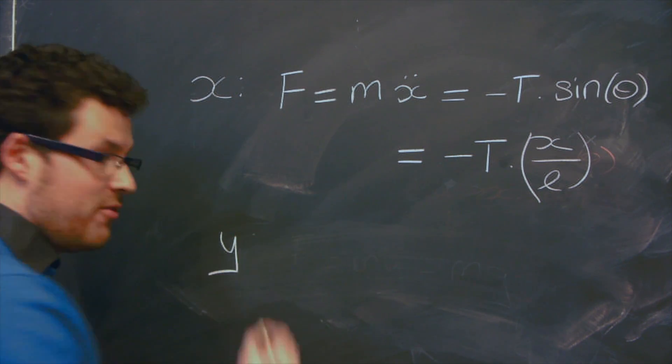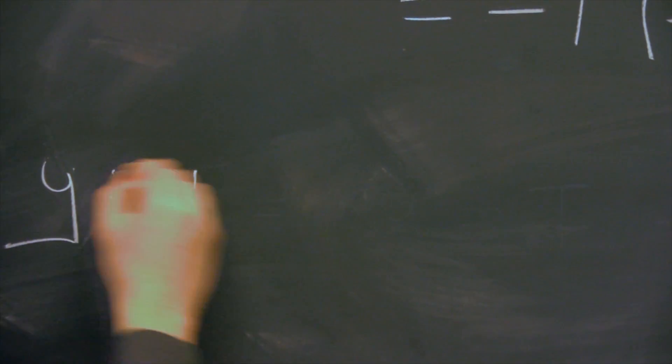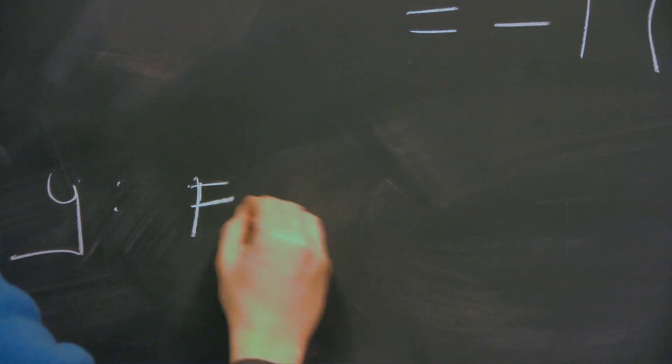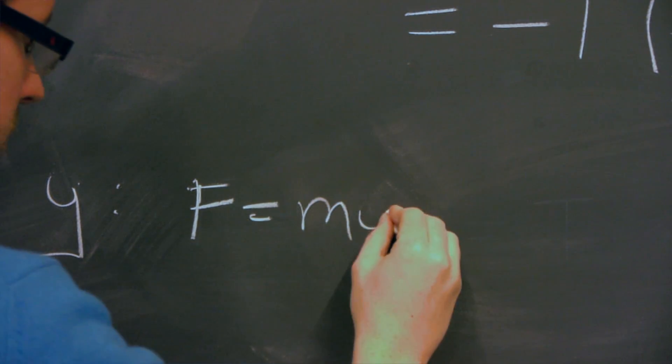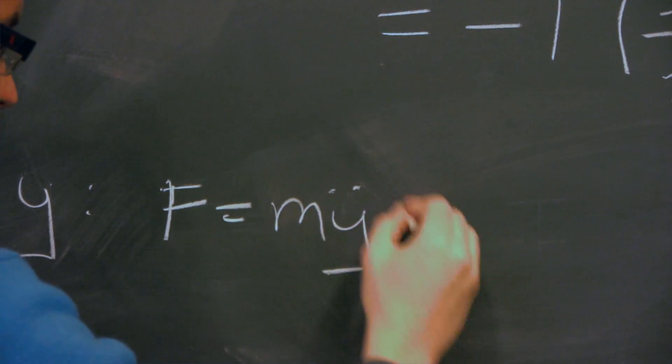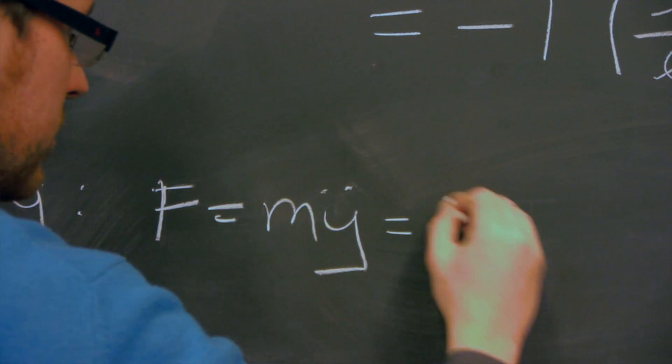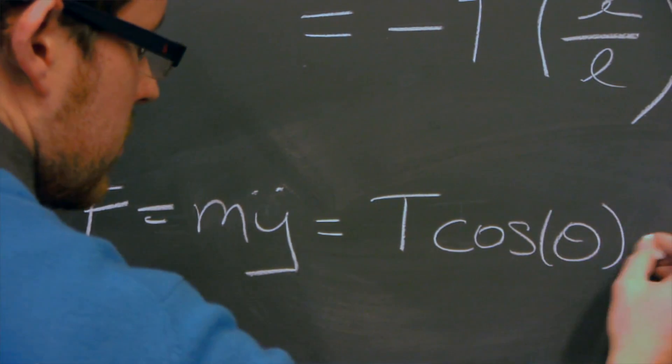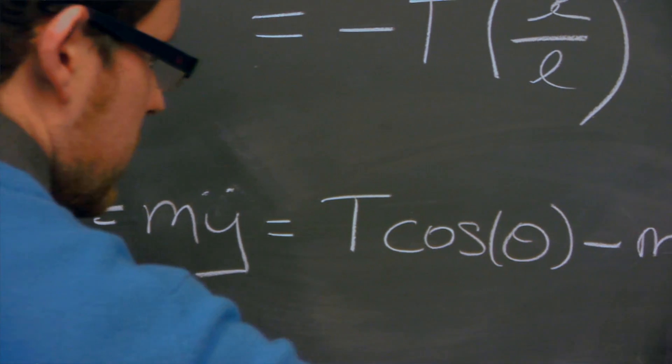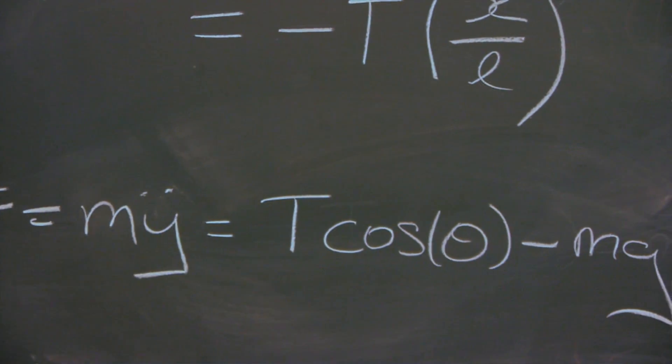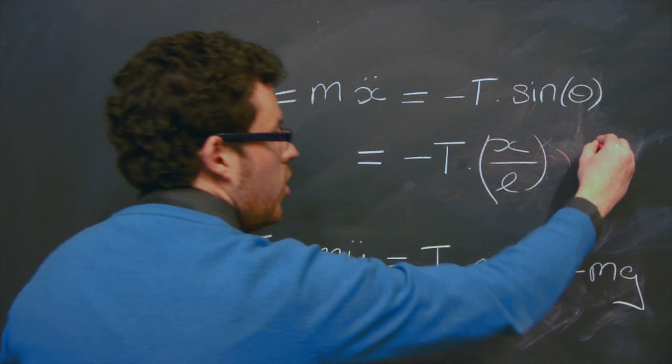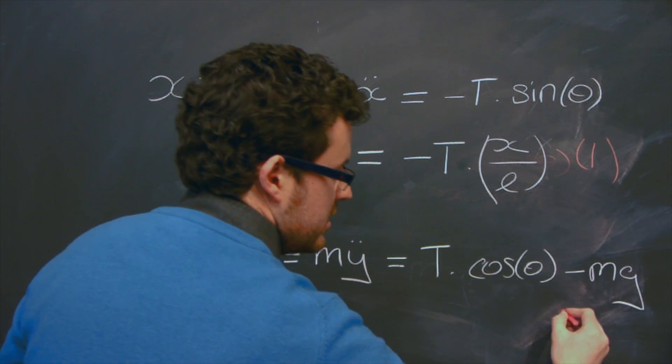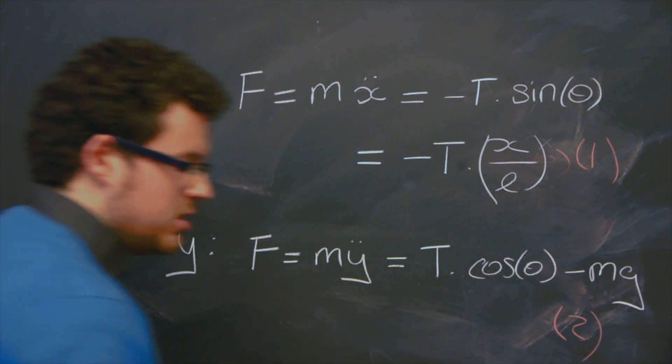So we look now at the forces in the y direction. Here we have F is equal to my double dot. So we can write this as T times the cosine of theta minus mg. So we'll label these equations 1 and this one number 2.